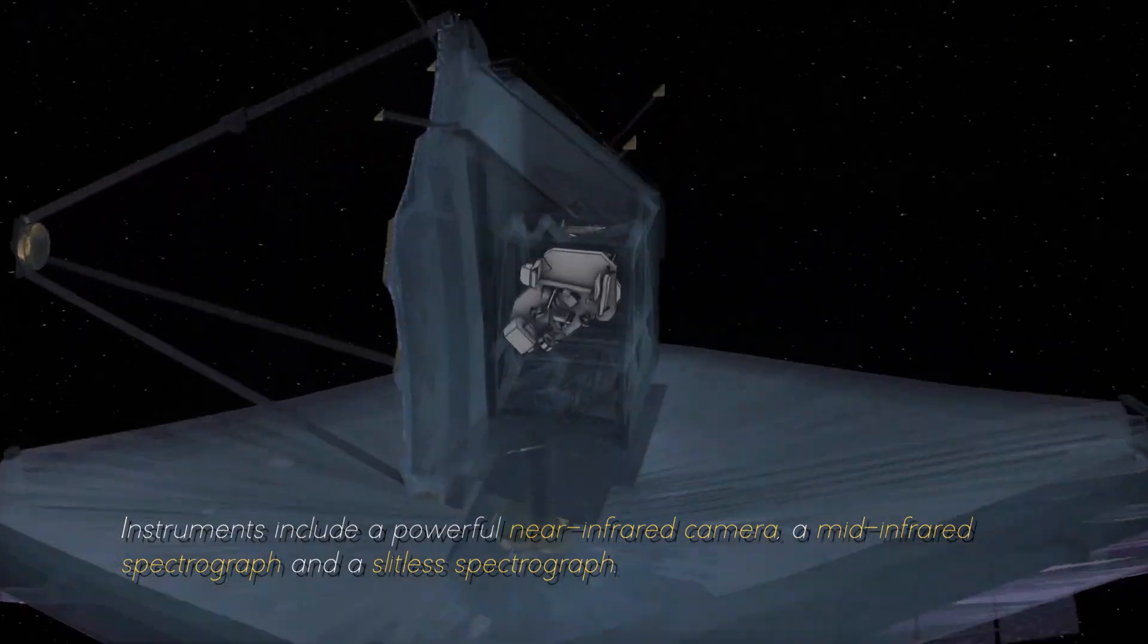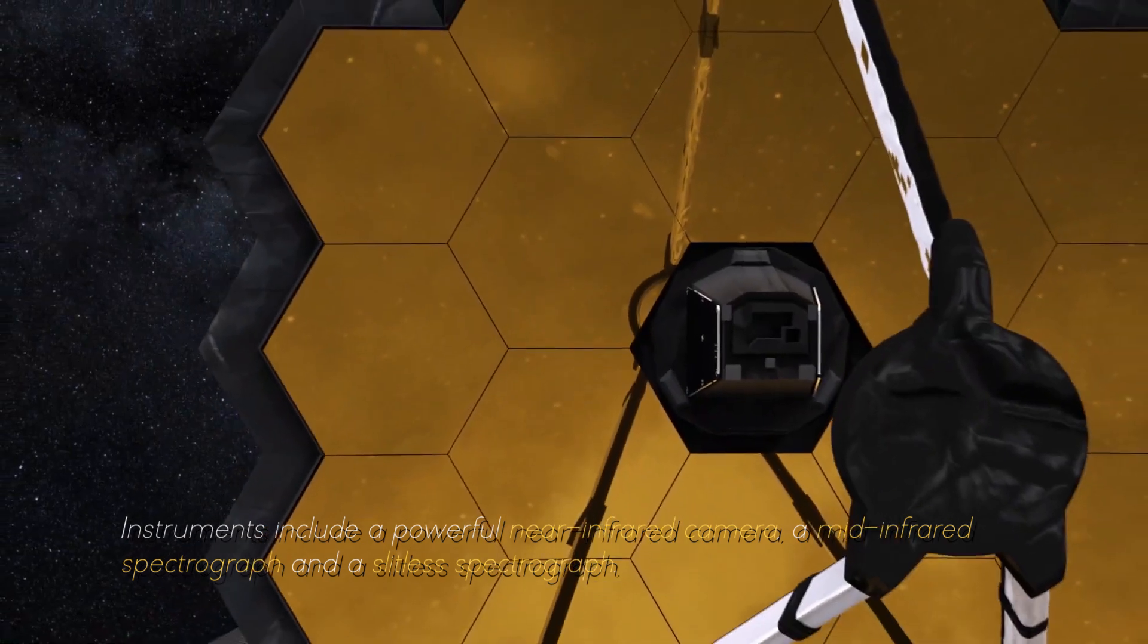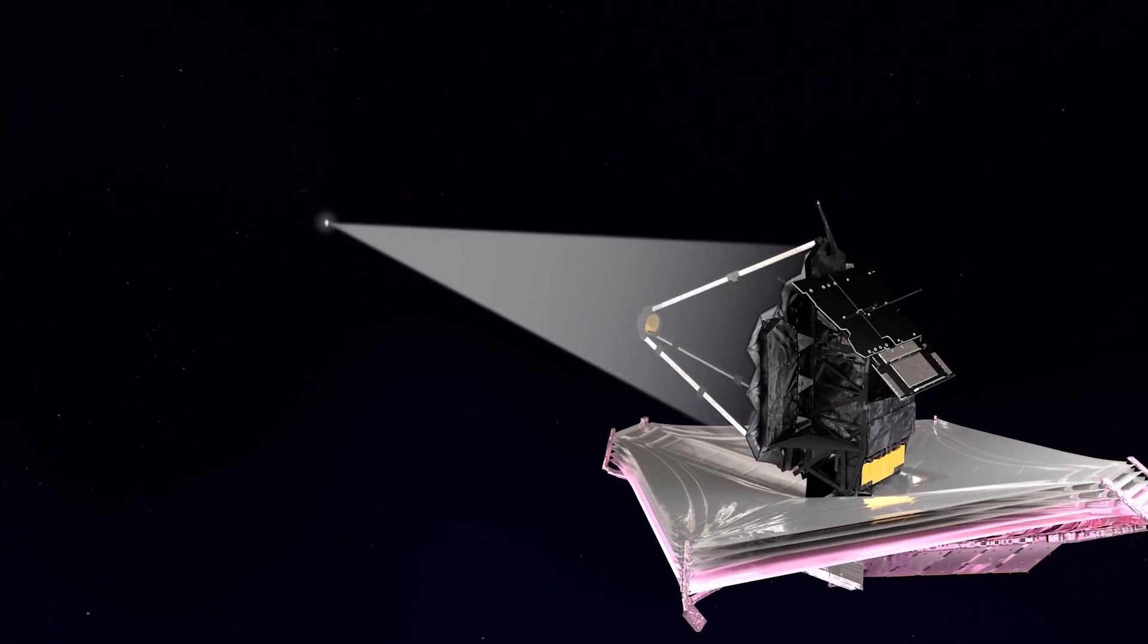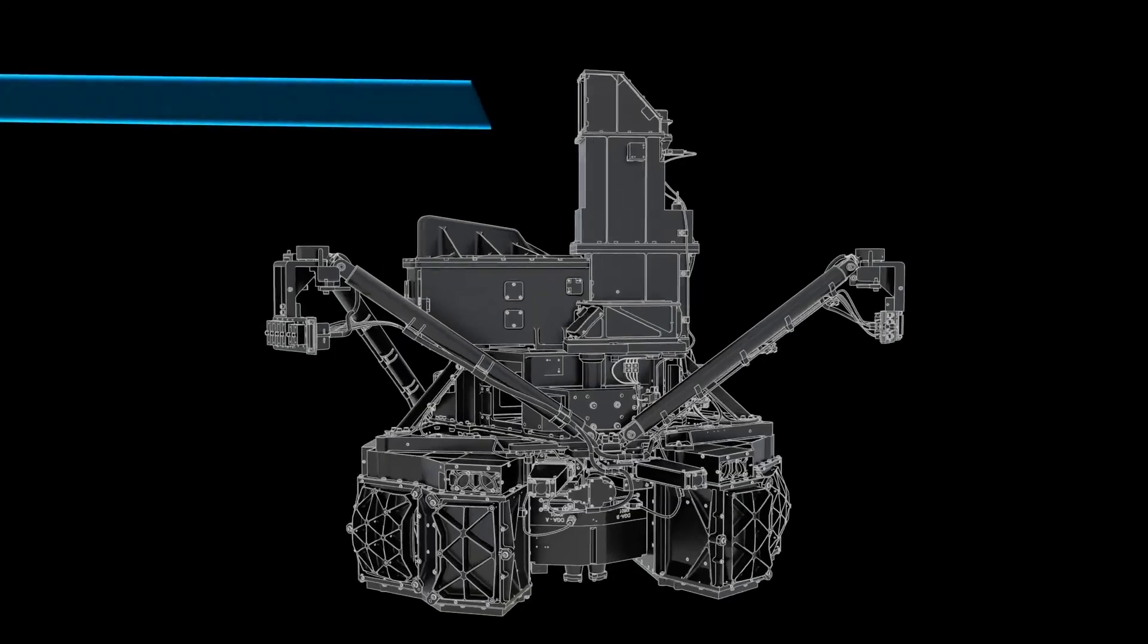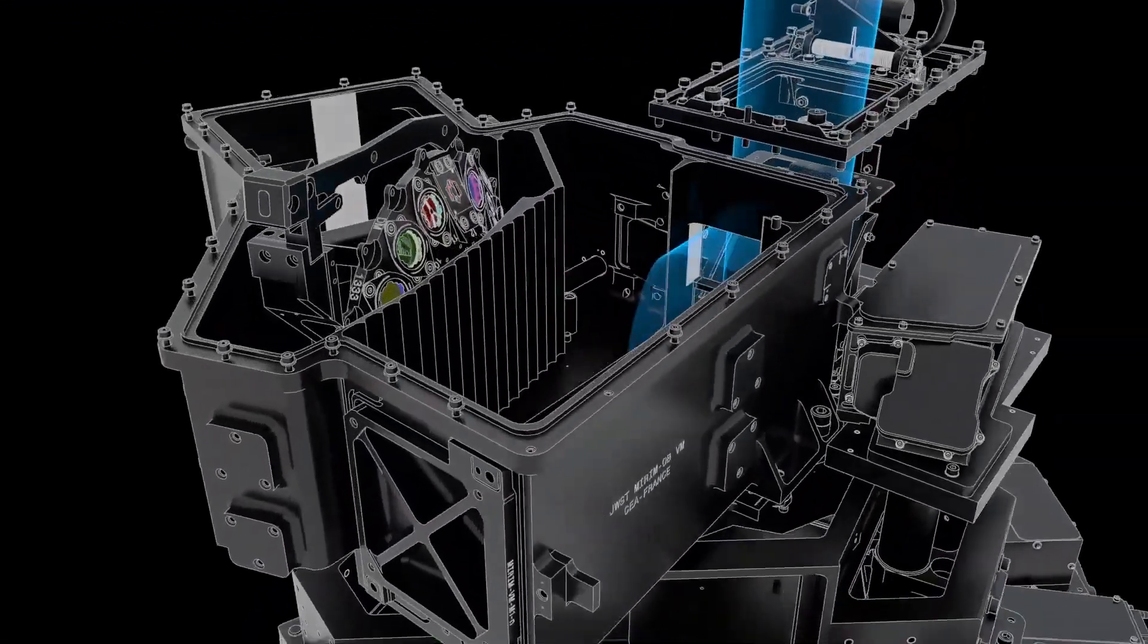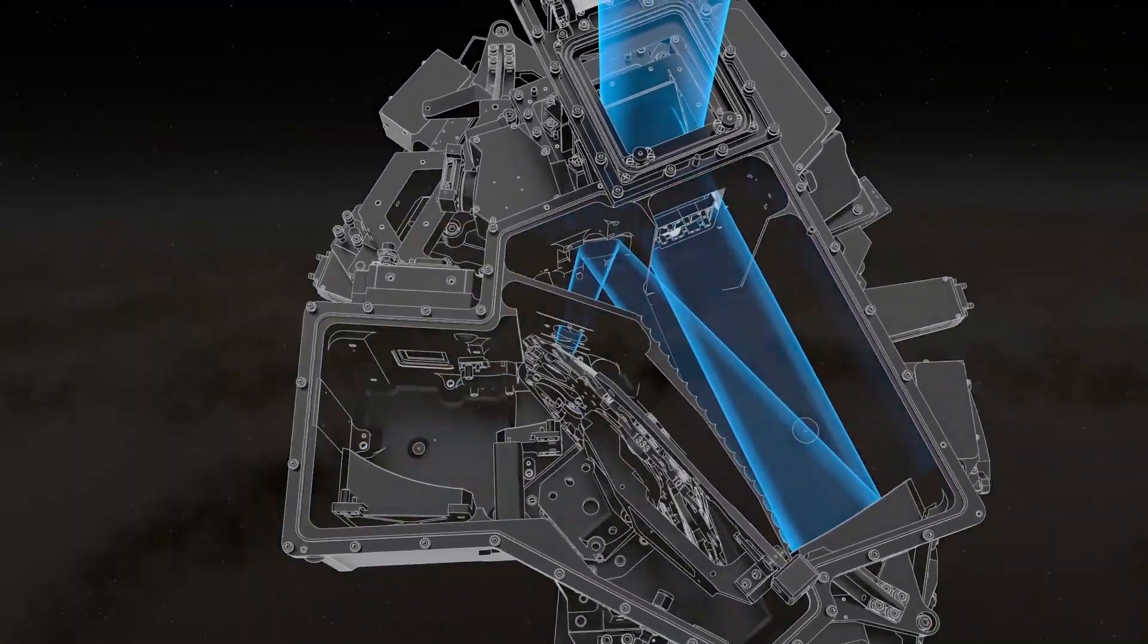This allows the JWST to collect and focus light from distant celestial objects with unmatched precision and sensitivity. Instruments include a powerful near-infrared camera, a mid-infrared spectrograph, and a slitless spectrograph. These instruments work together to capture images, measure spectra, and study the properties of objects ranging from the oldest galaxies to the planets of our solar system.